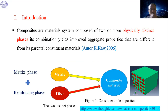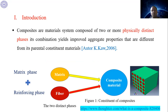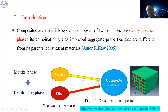Composite materials are a material system composed of two or more physically distinct phases of materials combined together to yield or produce improved aggregate properties that are different from the parental constituent materials. It consists of two phases: the matrix phase and the reinforcing phase. They are combined — not chemically reacted — to produce another material, which is called composites.